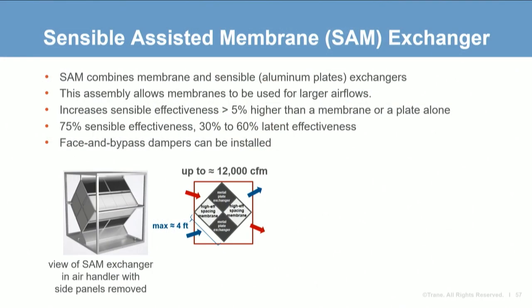The next type is the sensible assisted membrane, or SAM. SAM is a cross-flow heat exchanger that combines membrane exchangers and sensible aluminum plate exchangers together in one assembly. This expands the scale where membrane exchangers can be used, increasing the airflow range where total energy recovery cross-flow exchangers can be used, allowing them to be applied in larger commercial buildings. The smaller size SAM allows the use of high-efficiency membrane spacing exchangers.